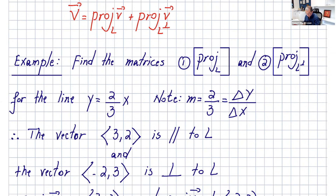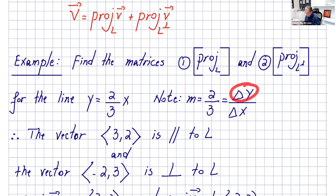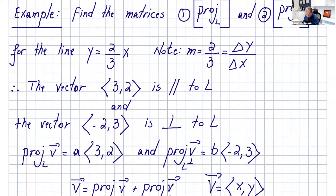Let's work with an example for the line y = (2/3)x. The slope of this line is 2/3, and we know the slope is delta y over delta x. So a vector with components (3, 2) will always be parallel to L, and any scalar multiple of this vector is parallel to L. A vector perpendicular to this — since perpendicular lines have slopes that are negative reciprocals — gives slope -3/2, so the vector (-2, 3) is perpendicular or orthogonal to L.